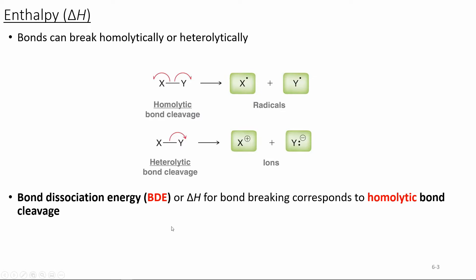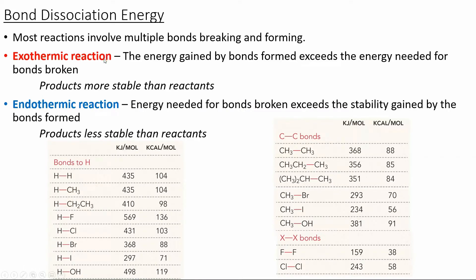The bond dissociation energy, or the change in enthalpy, is going to be the corresponding energy required for a homolytic bond cleavage, and for specific atom pairs we'll have a value for this. In an exothermic reaction, the energy gained by forming the bonds is going to exceed the energy needed to break the bonds, so this should happen spontaneously — the products are more stable than the reactants. In an endothermic reaction, we're going to have to have some energy input, so the energy needed for breaking the bonds exceeds the stability gained by forming the product.